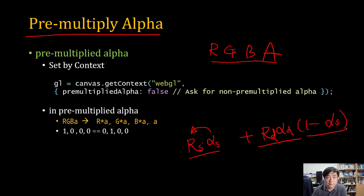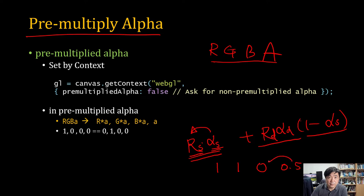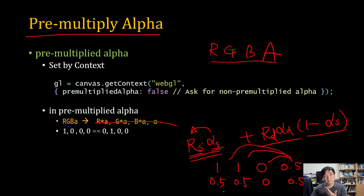If the alpha source and color value are pre-multiplied, for example if red, green, blue, alpha is 1.0, 1.0, 1.0, 0.5, then after pre-multiplying it becomes 0.5, 0.5, 0.5, 0.5 — the alpha does not change. This is a much more efficient way to calculate blending.